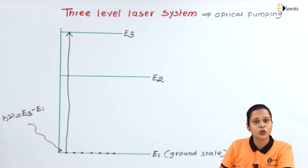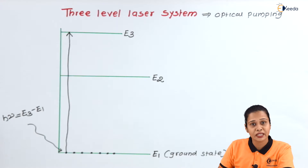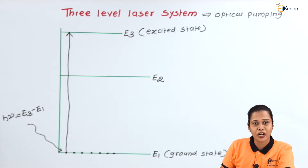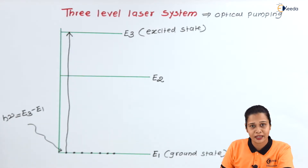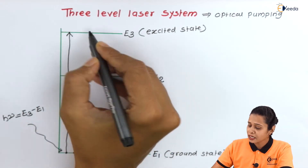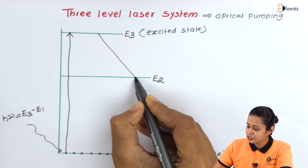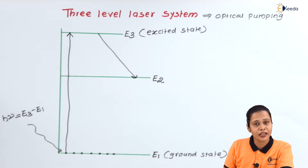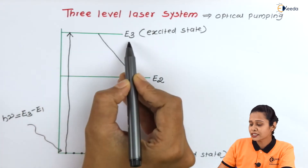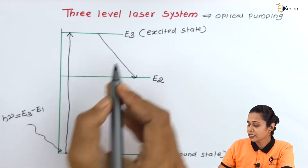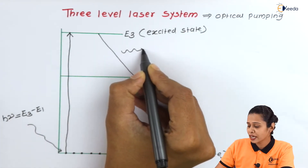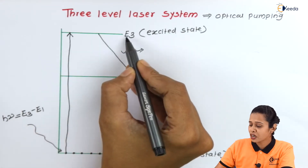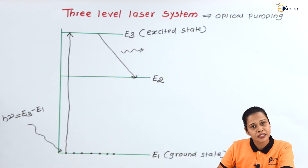This excited state E3 is only an excited state — it is not a metastable state. Hence, the lifetime of the particle here is very less, approximately 10 raised to minus 8 seconds. After completing that time, this particle immediately comes back to the lower energy level E2. Whenever there is a transition from higher energy level to lower energy level, there is an emission of energy, and this transition from E3 to E2 is called spontaneous emission.